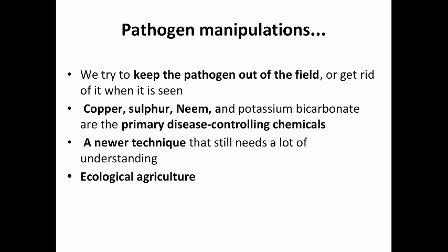For pathogen manipulation, we try to keep the pathogen out of the field or get rid of it when it is seen. This can be done either manually by removing the affected host tissue, or by chemicals — copper, sulfur, and neem are primary disease-controlling chemicals. Newer techniques still need a lot of understanding — non-pathogenic microbes can compete with or kill the pathogen. In ecological agriculture, we must include diversity of microbes in soil and on leaves for disease control in the future.